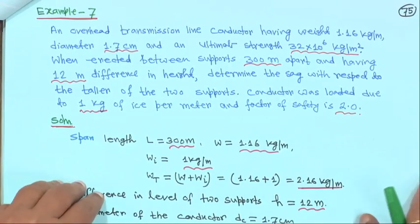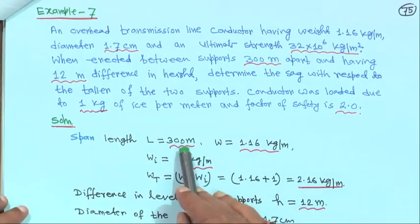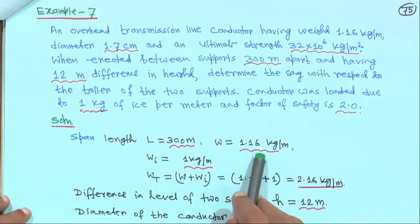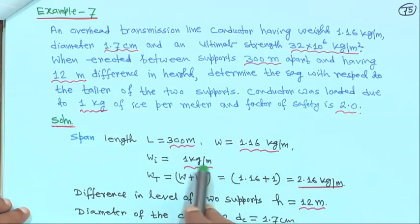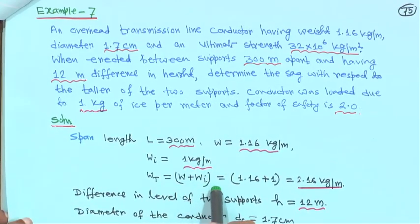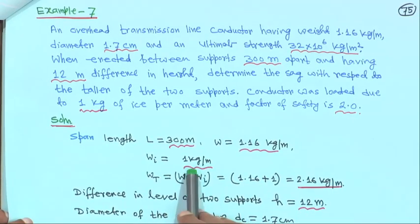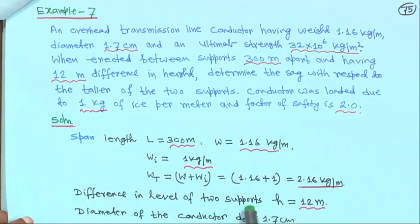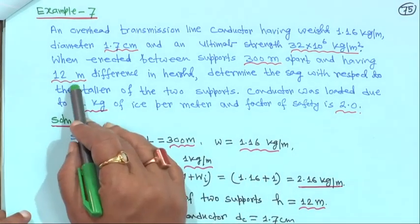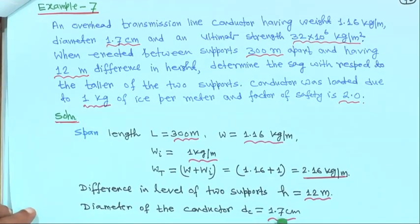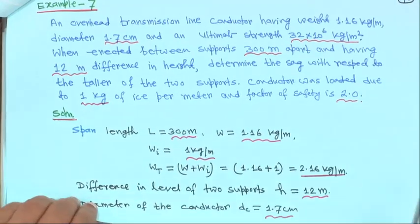Here we are considering ice coating on the conductor. Span length L is equal to 300 meter. W is 1.16 kg per meter and Wi is 1 kg per meter. Total weight Wt is equal to W plus Wi, so 1.16 plus 1 equals 2.16 kg per meter. Difference in level of 2 supports h is equal to 12 meter. Diameter of conductor DC is 1.7 centimeter.